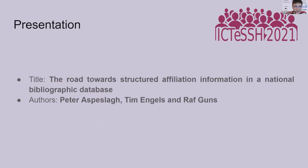The first paper is related to the bibliographic database. It's entitled 'Towards Structured Affiliation Information in a National Bibliographic Database.' It's an issue we are all dealing with somehow, and when I say 'we' I mean all those involved in the development of research infrastructure at a university. The authors of this paper are Peter Aspeslach, Tim Engels, and Ralph Gans.